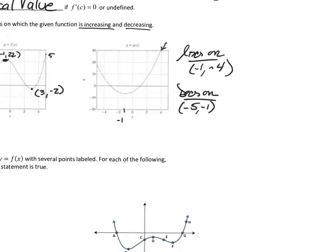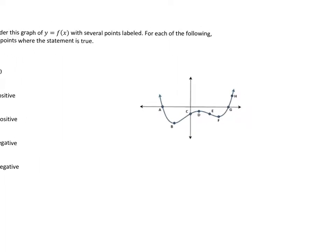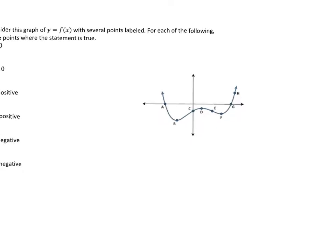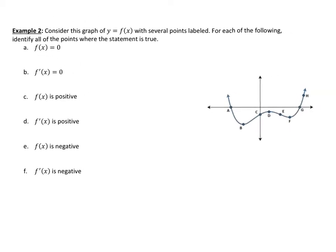Now we have a curve with all the points labeled. We can see where the slope of the tangent is negative, zero, positive, zero, negative, zero, positive. Let's answer several questions. When f(x) equals zero, the y-values are zero — that happens at points a and g. For f'(x) equals zero, the derivative is zero, meaning there's a horizontal tangent line — that occurs at b, d, and f.